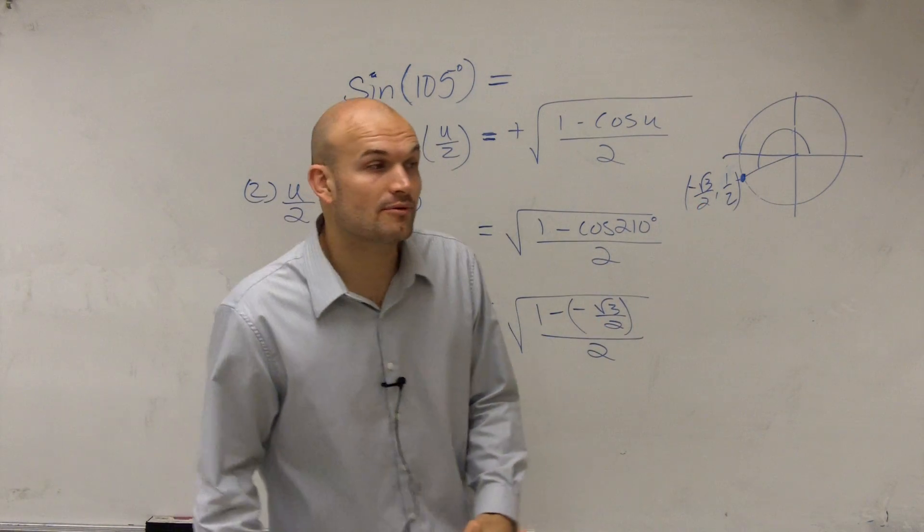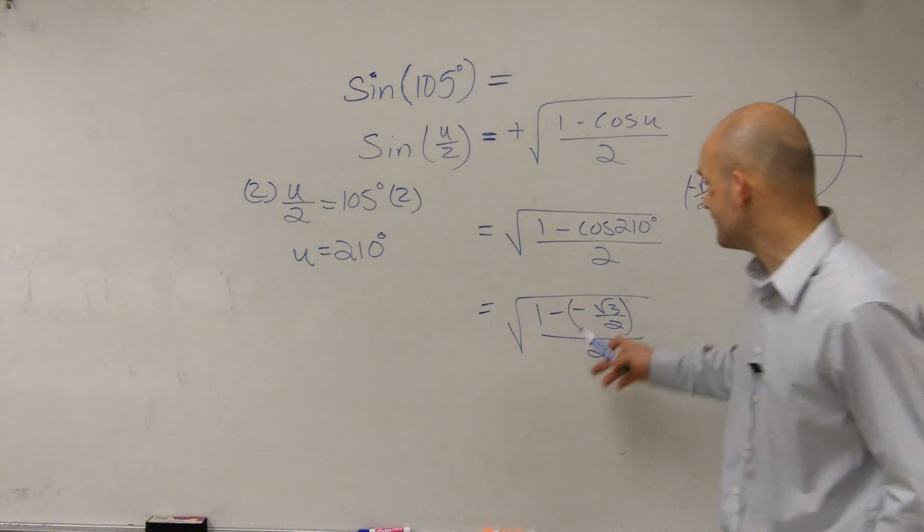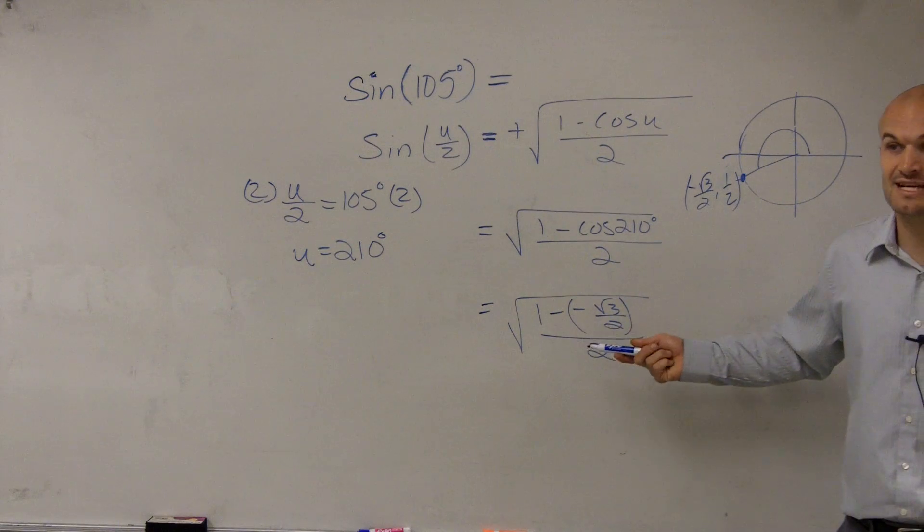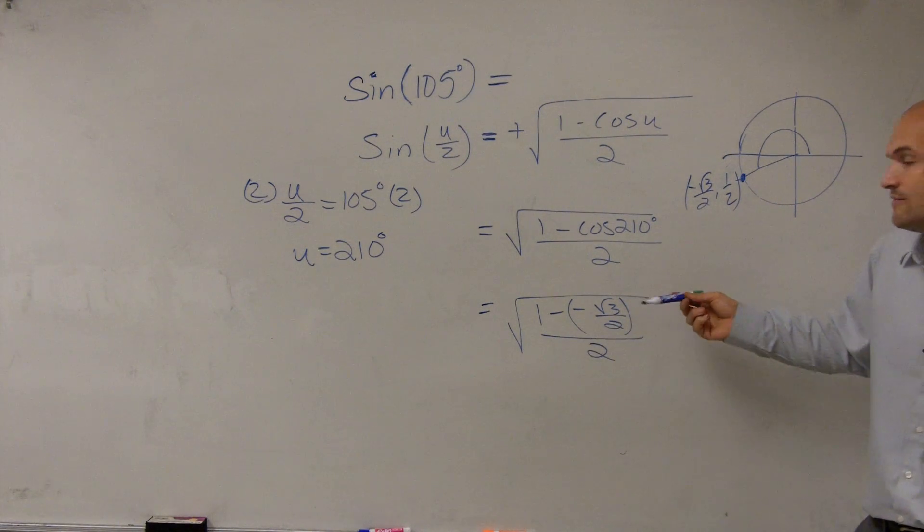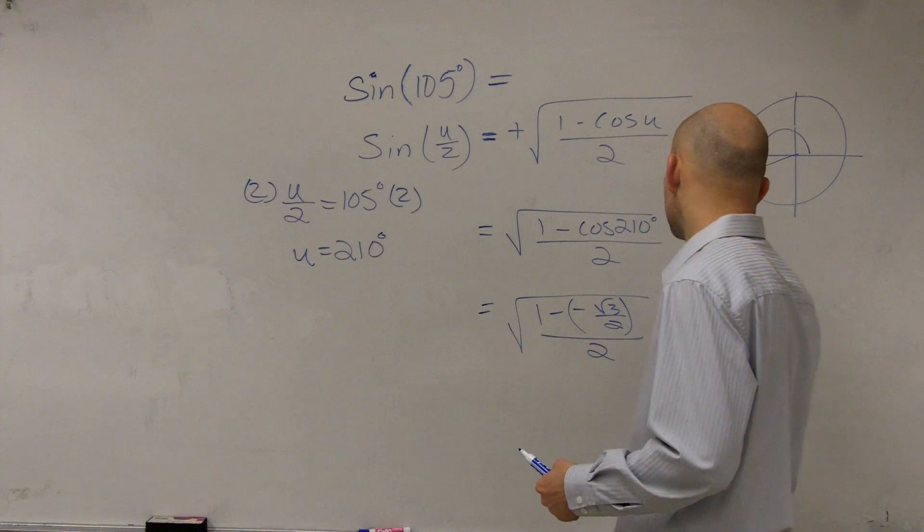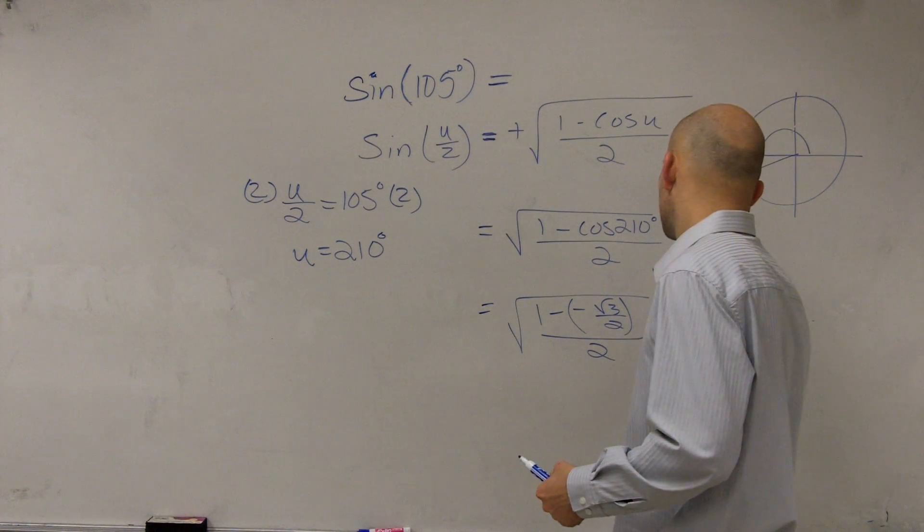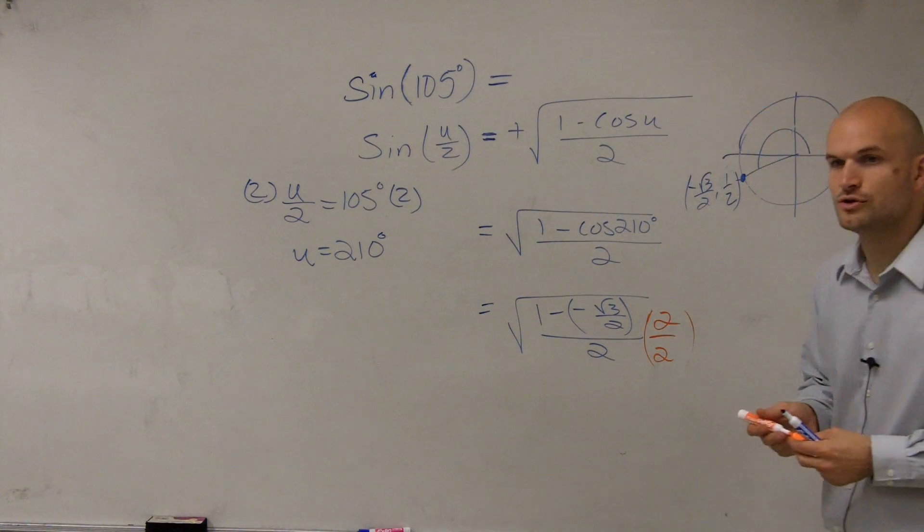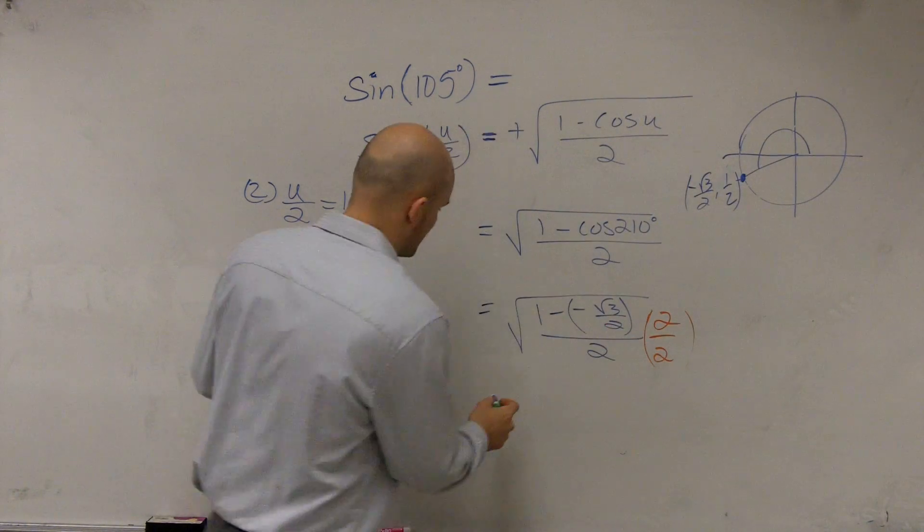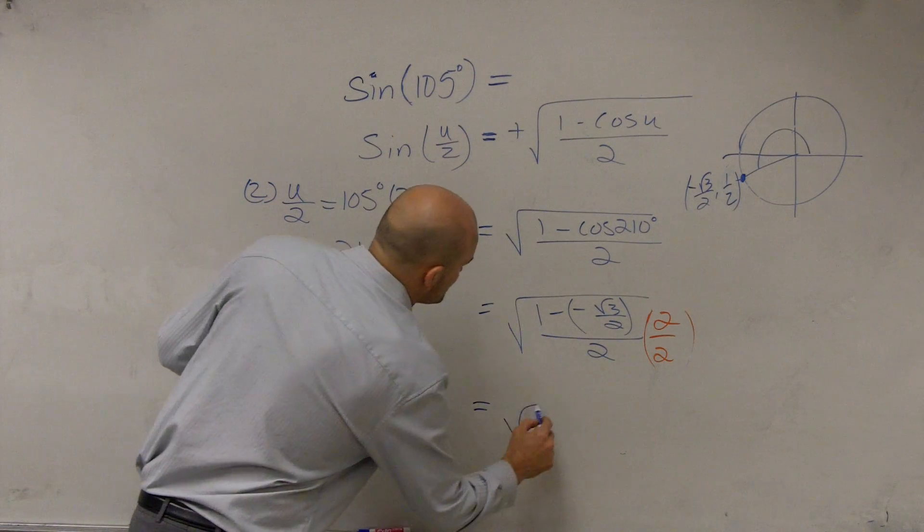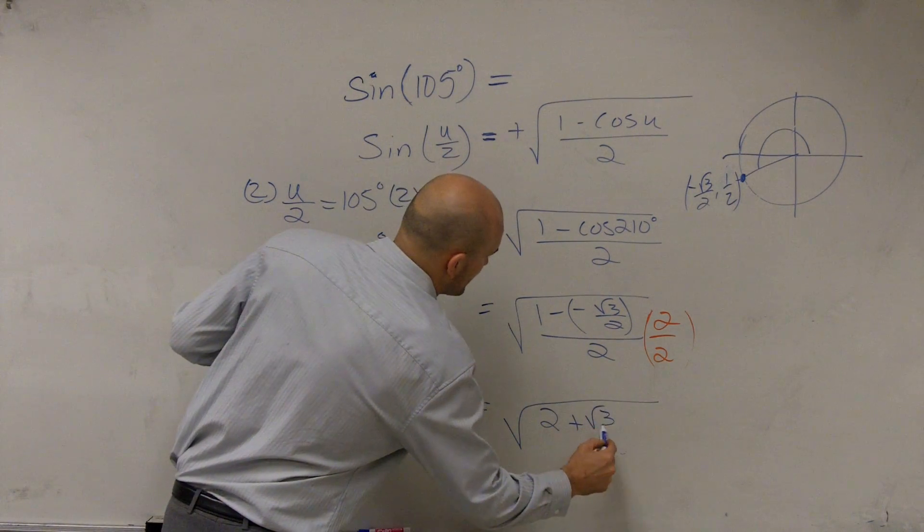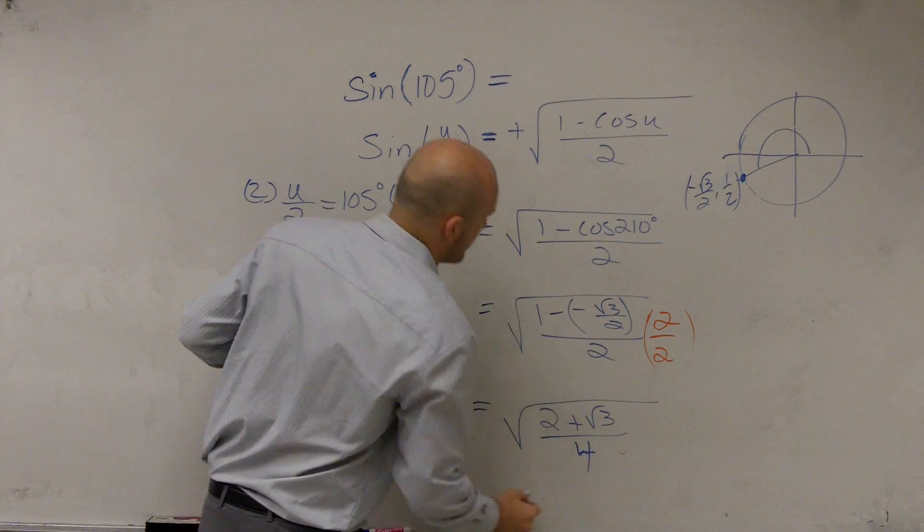Now the next thing that we want to do is we have a fraction divided by another number. Let's get rid of these fractions. If you guys remember in tangent, we did this, and what we did to get rid of the fraction is multiply by 2 over 2. Let's multiply by 2 over 2 and see what we get. Notice we have a double negative, so that's now going to turn positive. Therefore, I now have the square root of 2 plus the square root of 3 over 4.